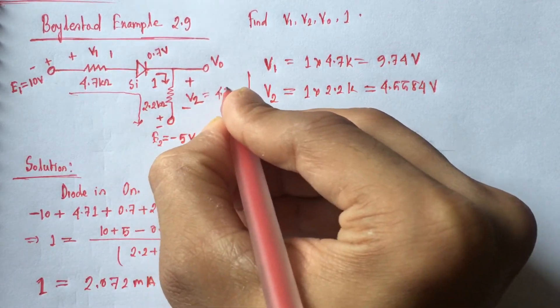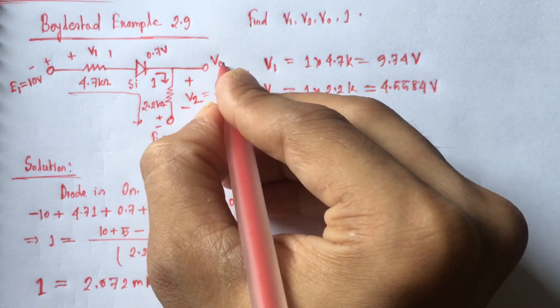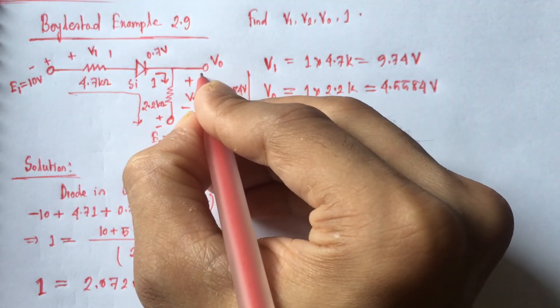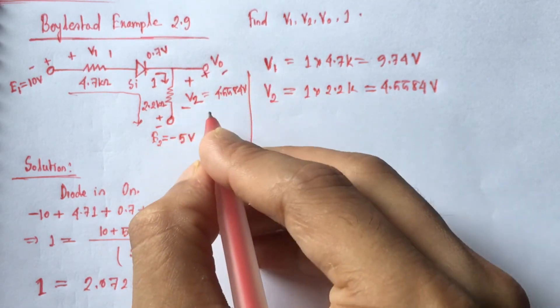V2 is 4.5584 volt and V0, polarity of V0 is, this is the positive end and this is the negative end.